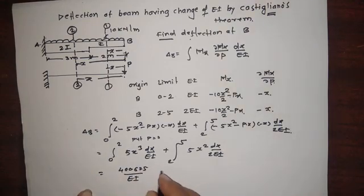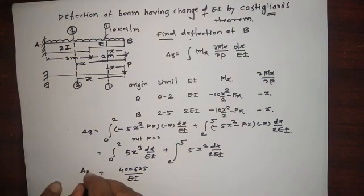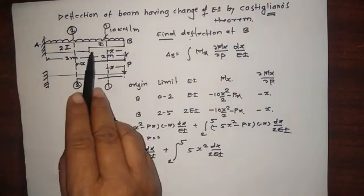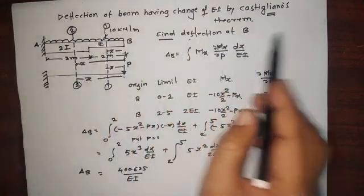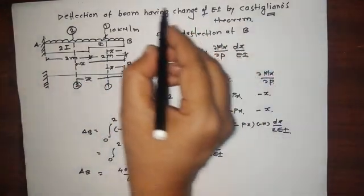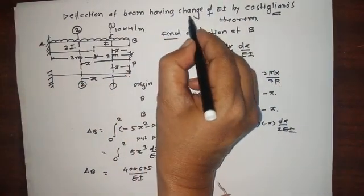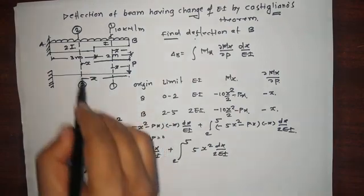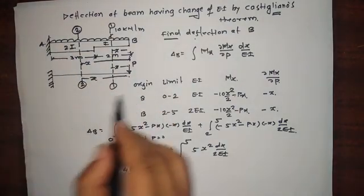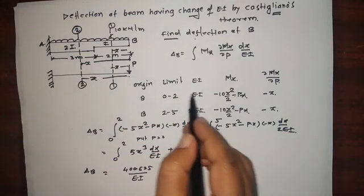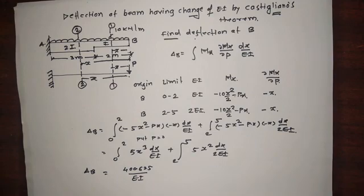So this is the deflection at B in the beam having a change of EI. The procedure in case of a change in EI is: make a section at every change of EI and then follow the routine procedure. Thank you.